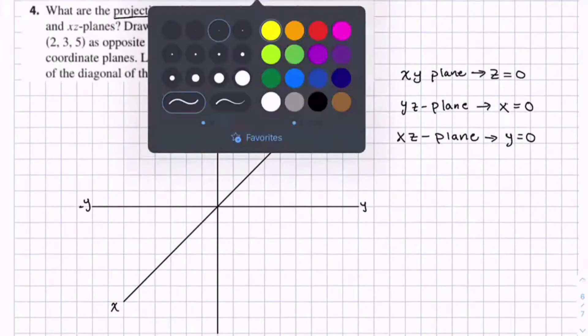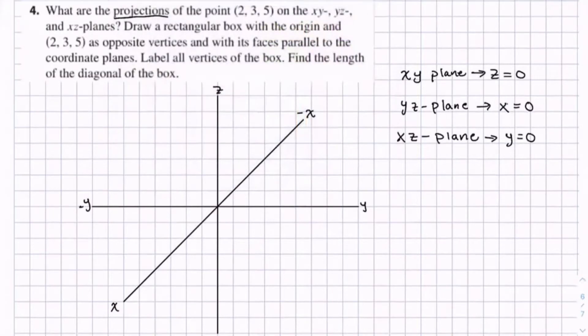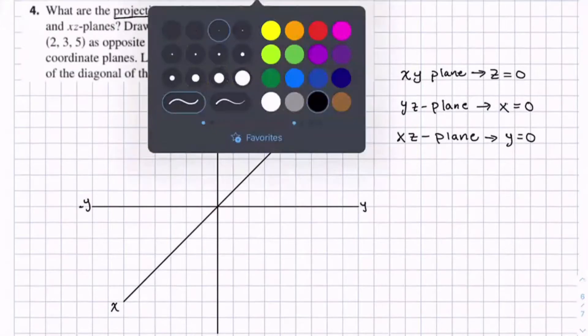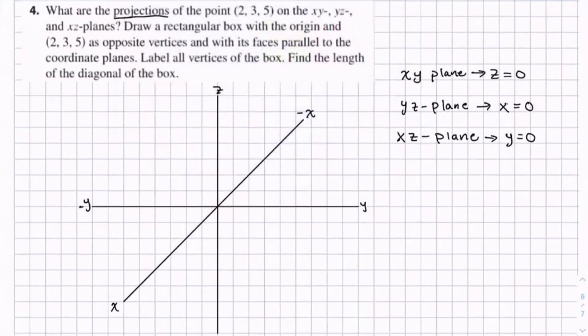So with that we can find the projections of this point. Well let's first, let's just draw this point: 2, 3, 5. So we go 2 along the x axis and 3 along the y.